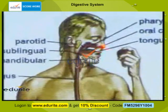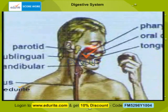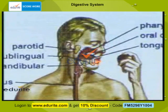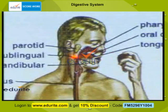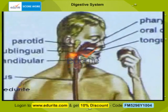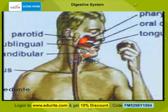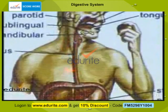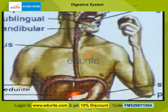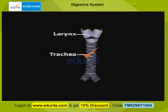The mouth is guarded in the front with lips. The roof of the mouth is called the palate, and at the base of the mouth is the tongue. The mouth leads into a common cavity called the pharynx. From here, two tubes originate: the food tube, that is the esophagus, which leads into the stomach, and the respiratory tube, the trachea.